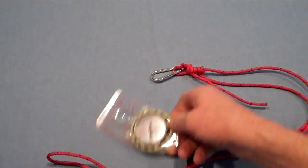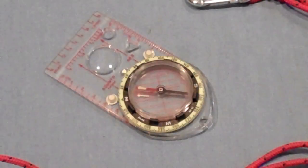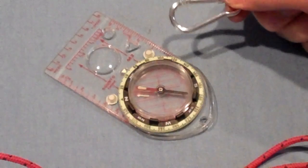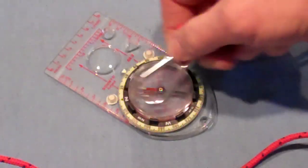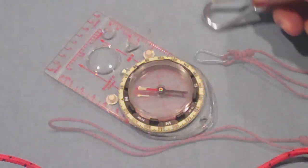Before you choose any snap though, make sure that it's not going to impact your compass. Here's how you tell. Take the snap and put it next to the magnetic part of your compass. The needle shouldn't be affected by it.